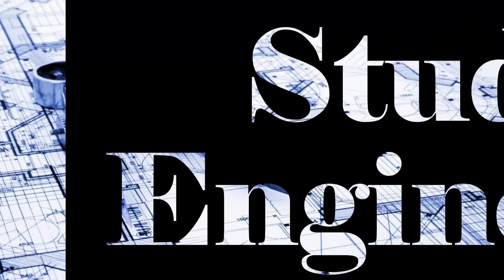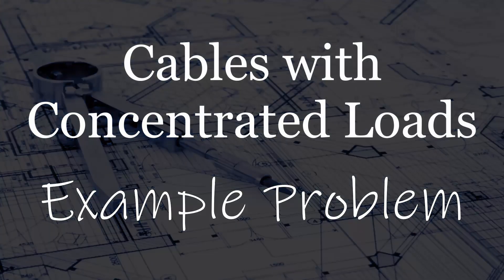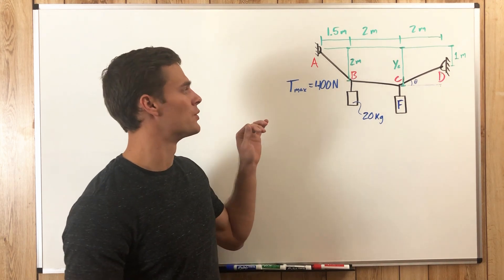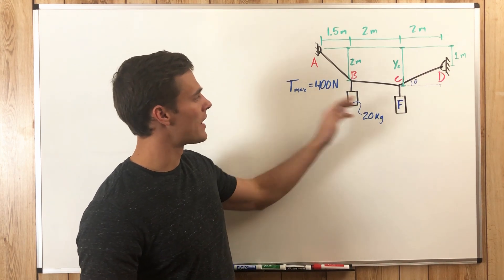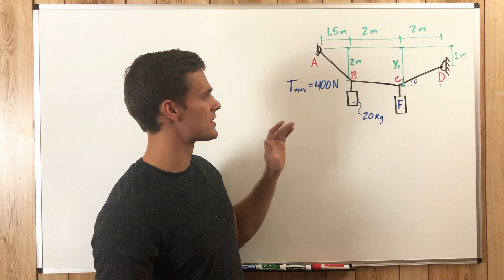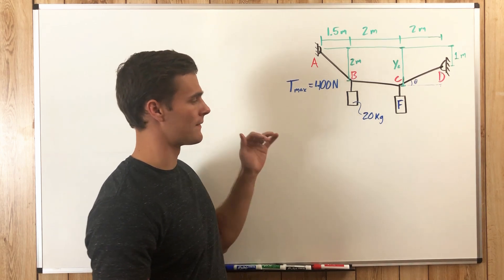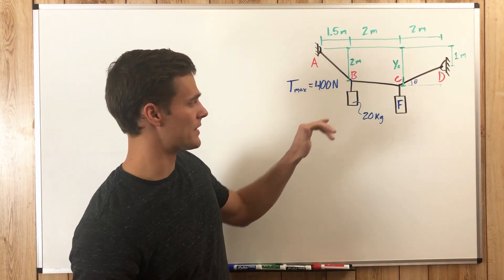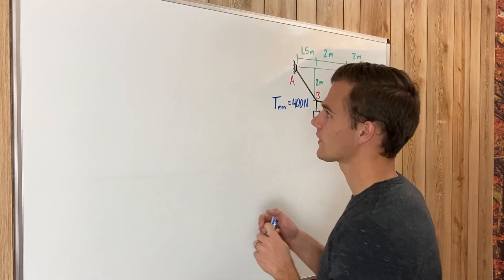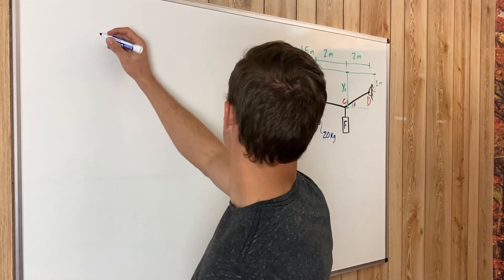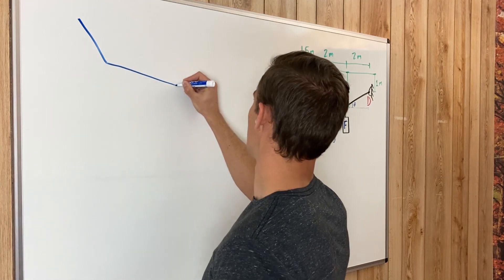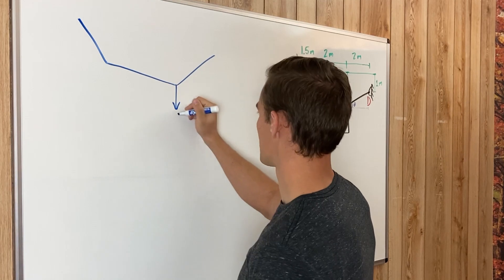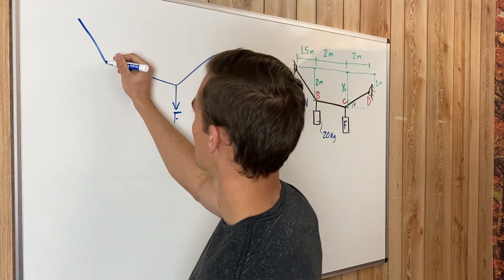The first thing we want to do is draw a free body diagram and use equilibrium equations, summing forces in the x and y direction and also taking moments about one of these points. So we're going to draw that up — here we have our segments of cable.